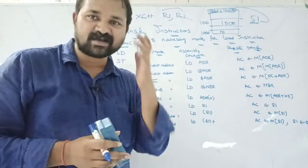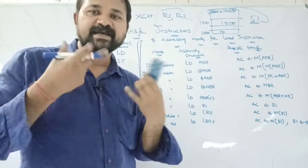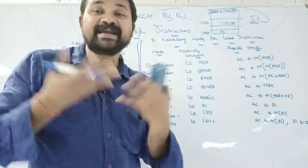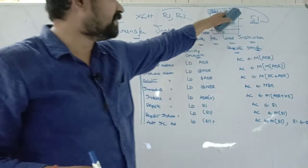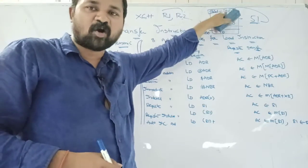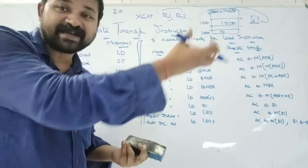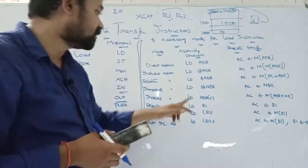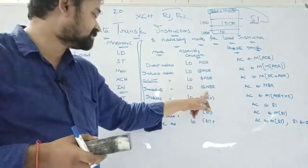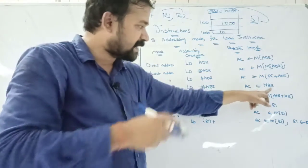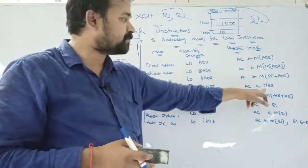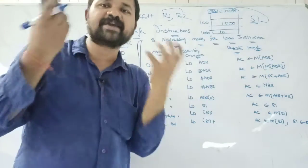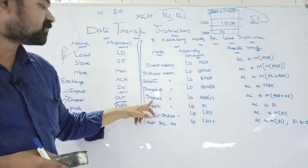Immediate addressing mode means the instruction itself contains the operand — there is no address. The '#' (hash) symbol represents immediate addressing. NBR specifies a number. So 'LD #NBR' means that number is directly loaded into the accumulator. For example, if the number is 100, then 100 becomes the content of the accumulator.